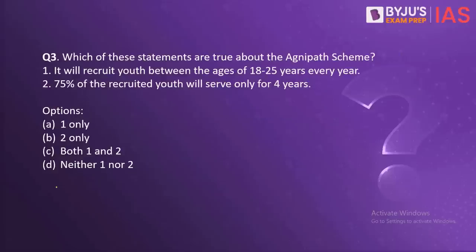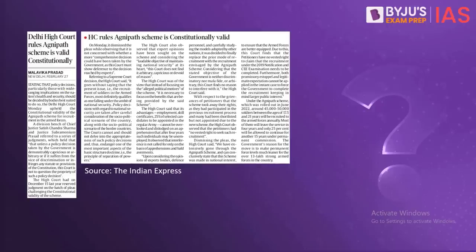The next question about the Agnipath scheme: which of these statements are true? It will recruit youth between the ages of 18 to 25 years every year. 75% of the recruited youth will serve only for four years. Recently, the Delhi High Court declared the Agnipath scheme to be constitutionally valid against arguments that it discriminates against certain sections of society. According to the court, that is not true, and the scheme is completely valid. The Agnipath scheme was introduced in the year 2022.